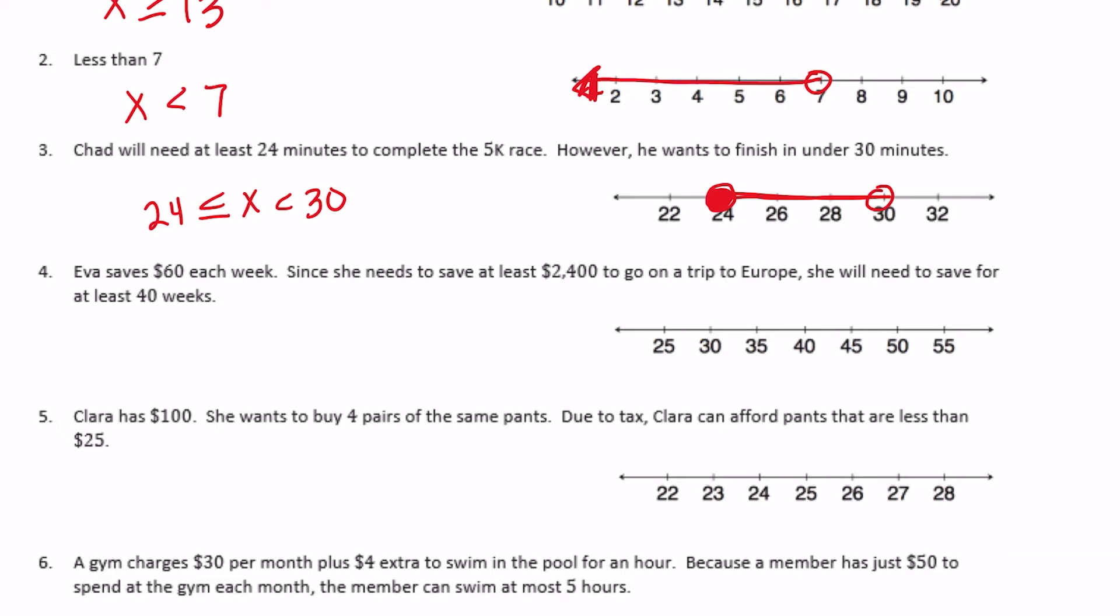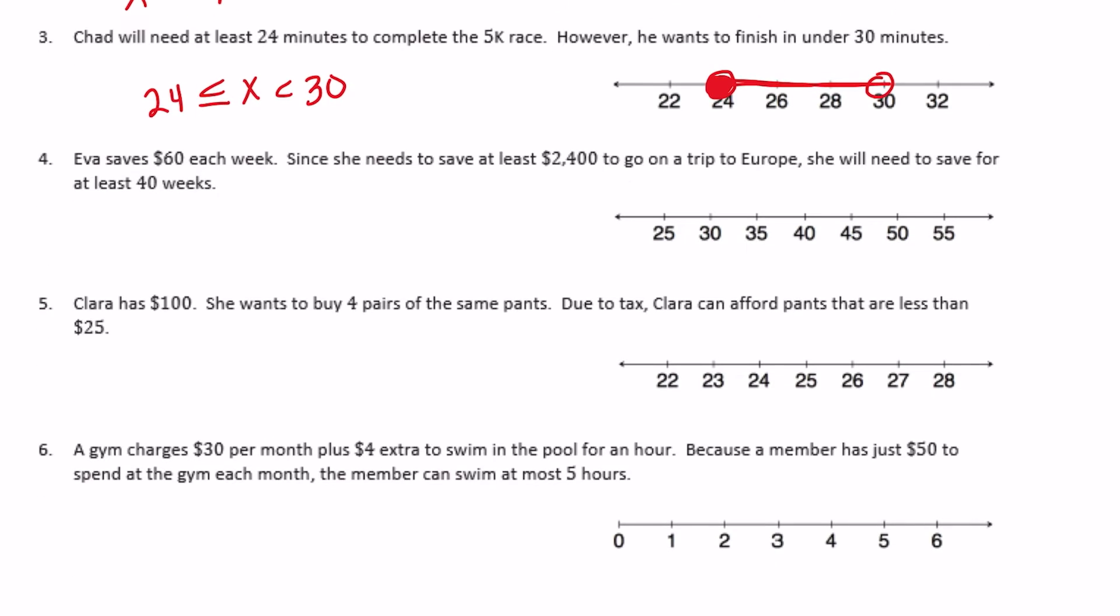Eva saves $60 each week. Since she needs to save at least $2,400 to go on a trip to Europe, she will need to save for at least 40 weeks. Okay, so she saves $60 a week, she needs to save at least $2,400, and she needs to save for at least 40 weeks.